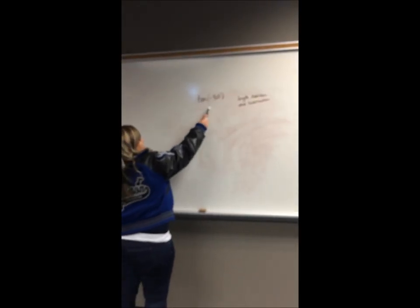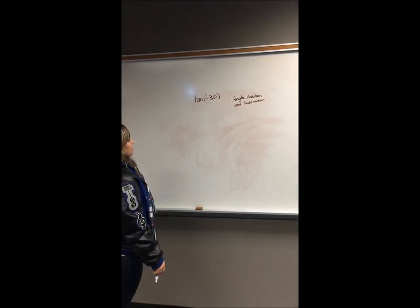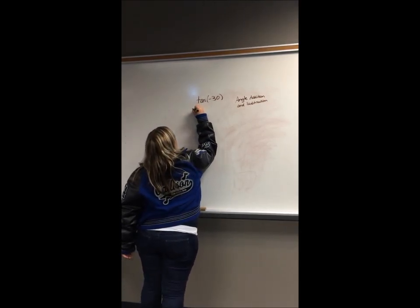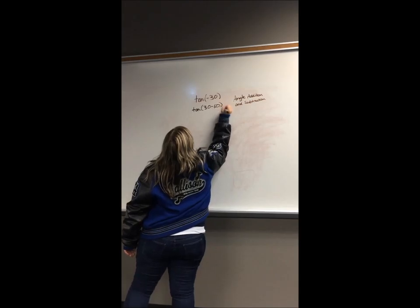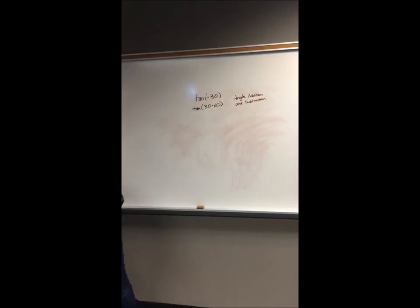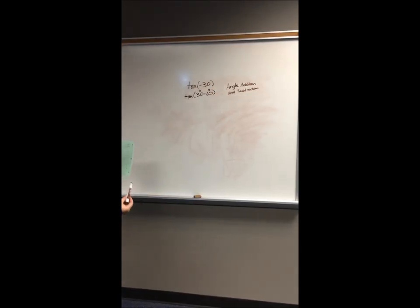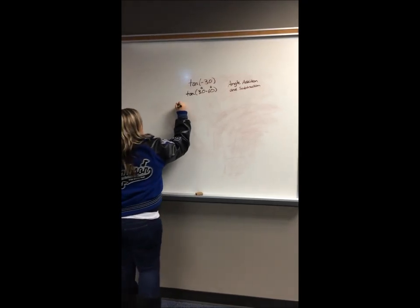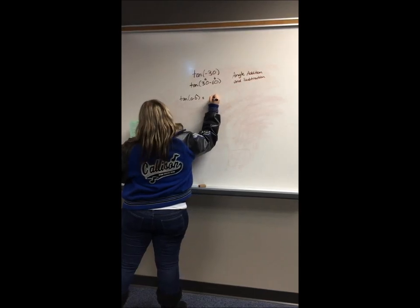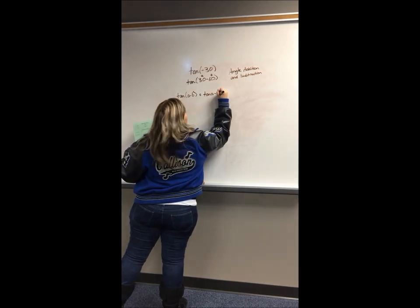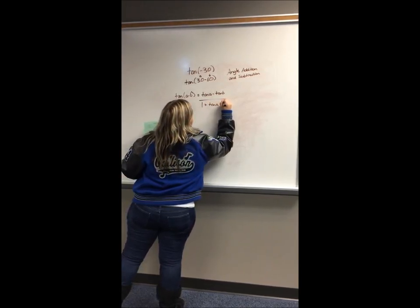For this problem, we're going to find the tangent of negative 30 using angle addition and subtraction. We have to figure out which angles add or subtract to equal negative 30, and the values we're going to use are 30 minus 60 degrees. Since we have our tangent a and tangent b values, we look at the addition and subtraction identities to find the equation for tangent of a minus b.